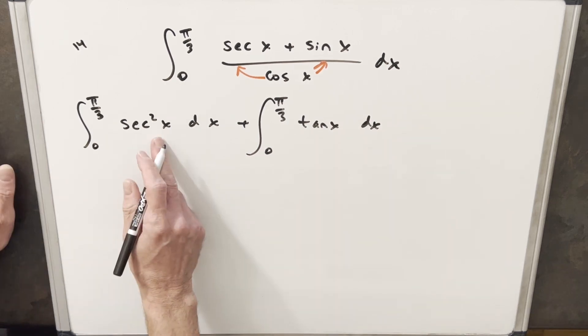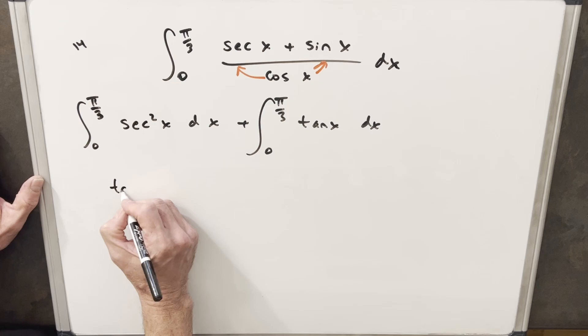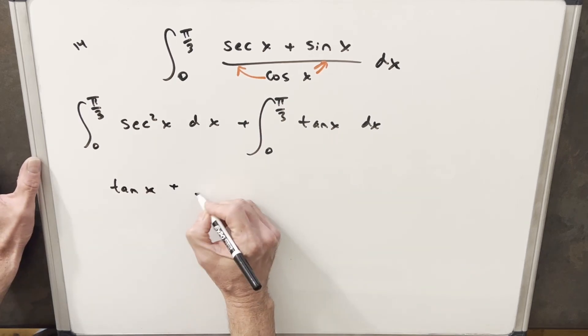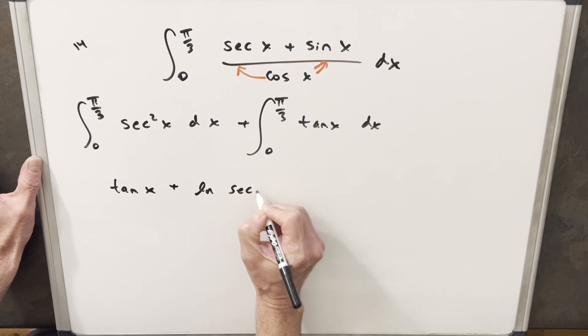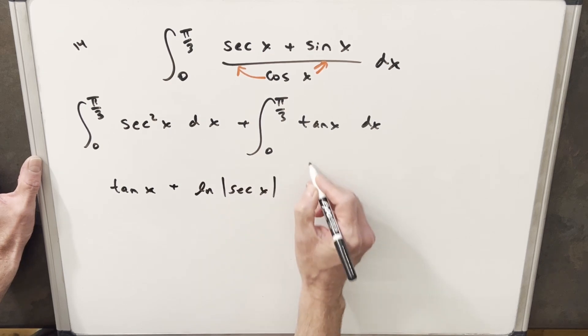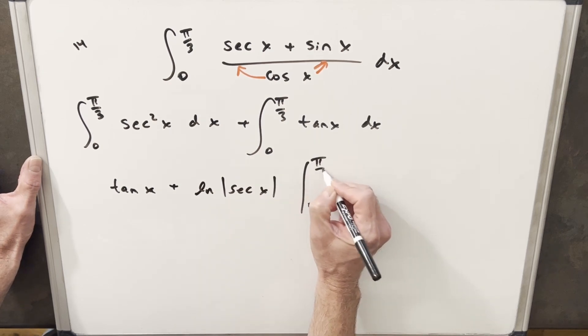But then these are both really well-known integrals. The integral of secant squared x is going to give me tan x. And the integral of tan x is going to be natural log of secant x. And we just need to evaluate this from 0 to pi over 3.